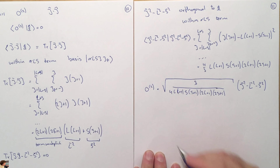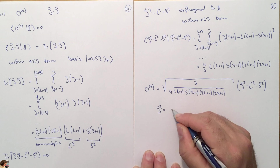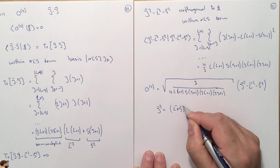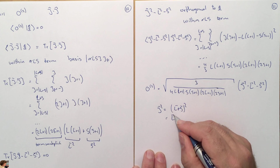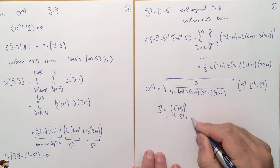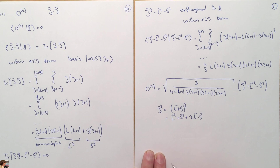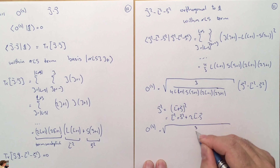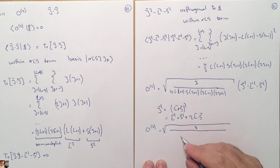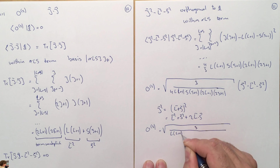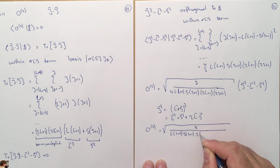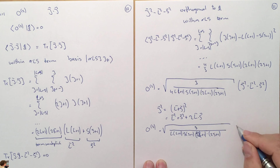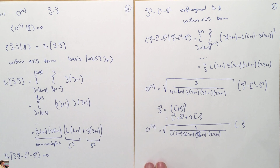We can rewrite this operator slightly. We know that J² = (L+S)² = L² + S² + 2L·S, and therefore J²−L²−S² = 2L·S. So our Stevens operator becomes sqrt(3 / [L(L+1)·S(S+1)·(2L+1)(2S+1)]) times L·S, where the factor of 2 cancels the 4 under the square root.